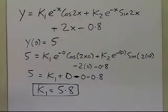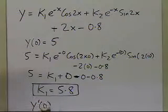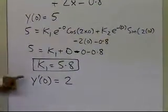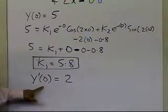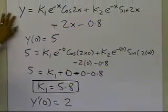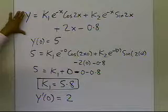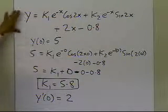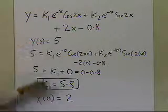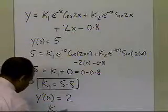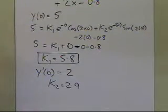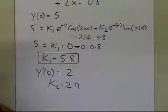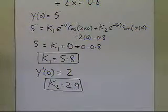In order to find k2, we need to apply the initial condition y prime of 0 equal to 2. You will have to take the derivative of the full solution expression, substitute x equal to 0, and equate it to 2. Doing so, you will get k2 equal to 2.9.